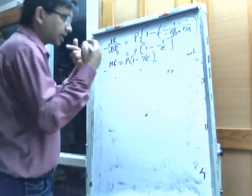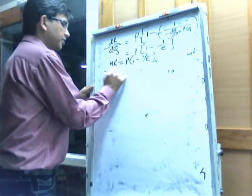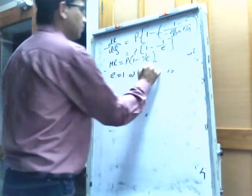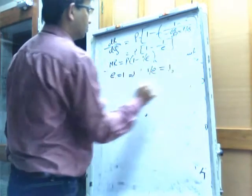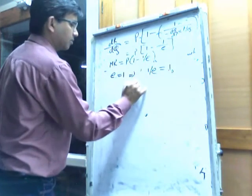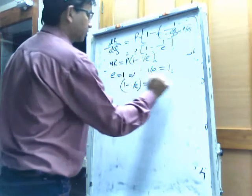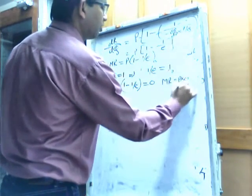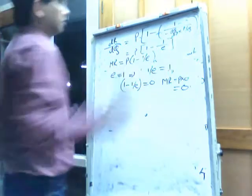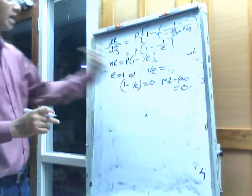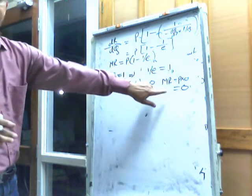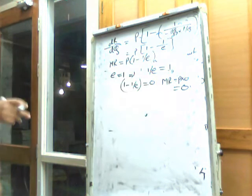From this formula, if e equals 1, then 1/e equals 1, so 1 minus 1/e equals 0, and marginal revenue equals p times 0 equals 0. So if price elasticity of demand is exactly equal to 1, the marginal revenue for that output will be 0.